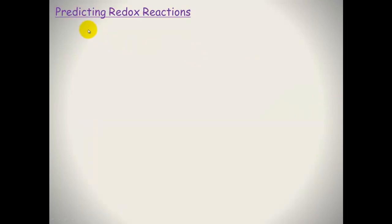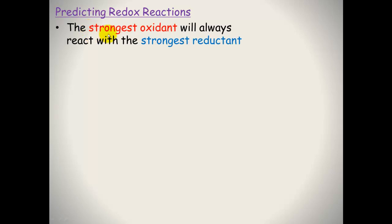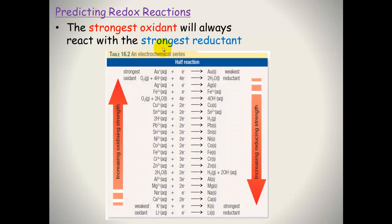We can use the electrochemical series to predict redox reactions, as long as we remember that the strongest oxidant will always react with the strongest reductant. So in this situation, if we have two half cells — one with copper and copper ions, and one with zinc and zinc ions —